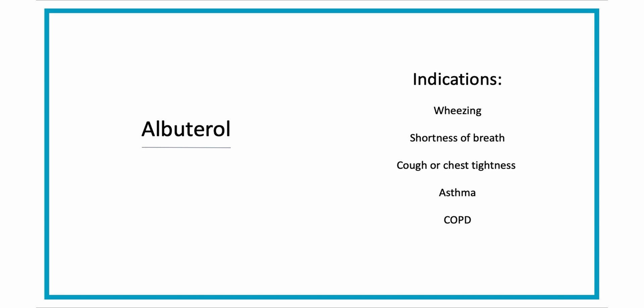Albuterol's indications — what it's usually given for — are breathing difficulties such as wheezing, shortness of breath, cough, and chest tightness that can be associated with asthma or COPD, which is chronic obstructive pulmonary disease. It can also be given as a preventative to patients who have difficulty breathing with exercise, to help them improve their breathing during exercise.